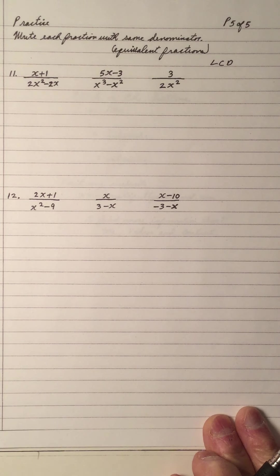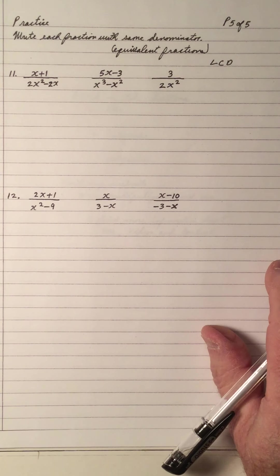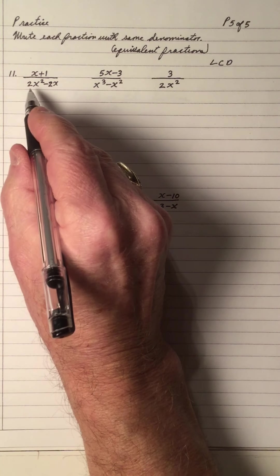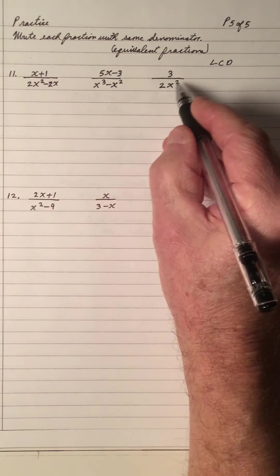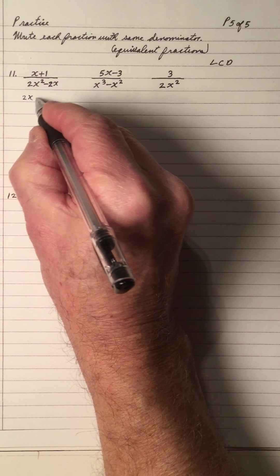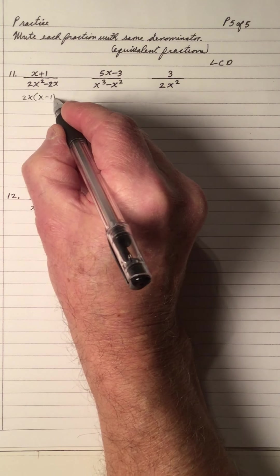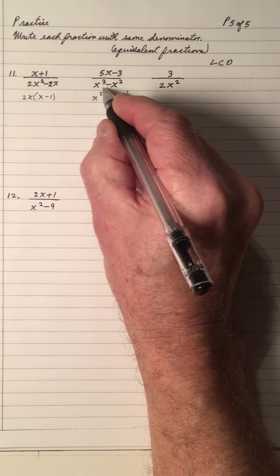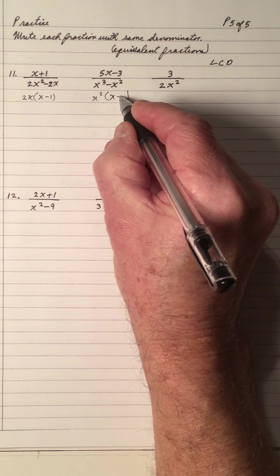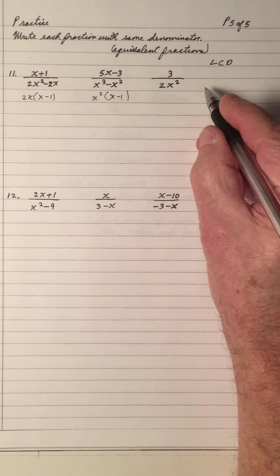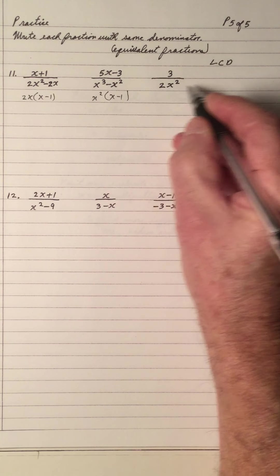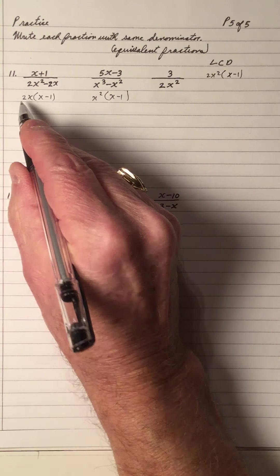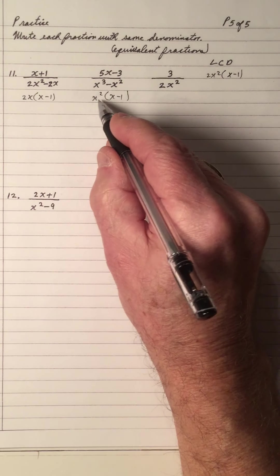Number 11 — I see a 2x and an x minus 1. When I divide 2x into both of these, I see an x and an x squared — x squared is common. So I get an x minus 1. The LCD is going to be 2x squared and x minus 1. So I need a 2, an x squared, and an x minus 1. I have 2x and x minus 1 — I need an x. I have x squared and x minus 1 — I need a 2. I have 2x squared — I need an x minus 1, top and bottom.